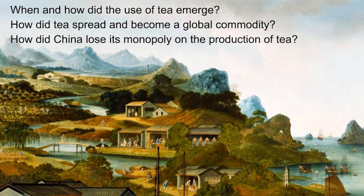One is: when and how did the use of tea emerge? We want to understand its history and origins, first in China. And then, how did it spread to the rest of the world? It becomes a hugely important global commodity that many people drink today. And how did China lose its monopoly on the production of tea? For many centuries that was the case — China dominated the production.